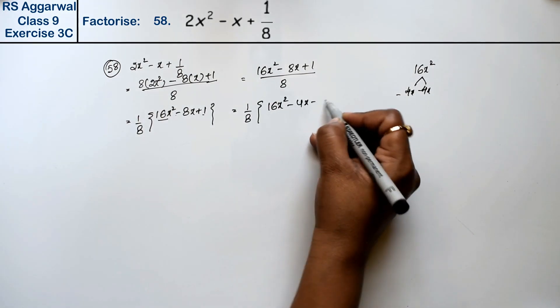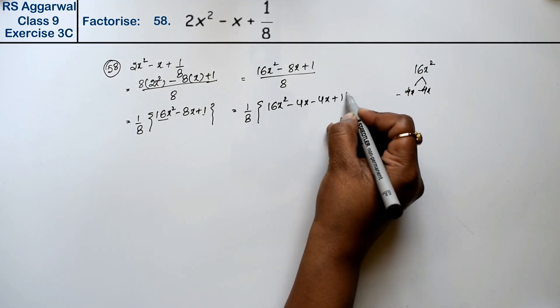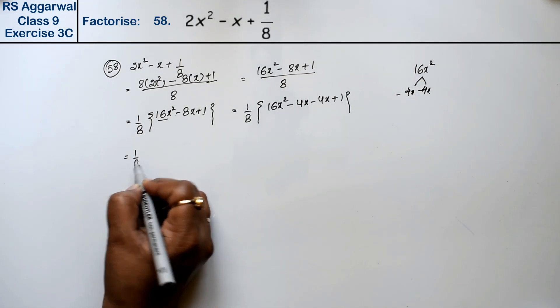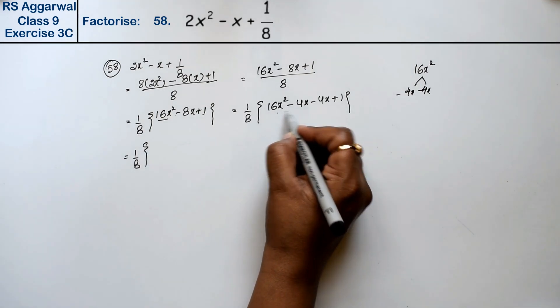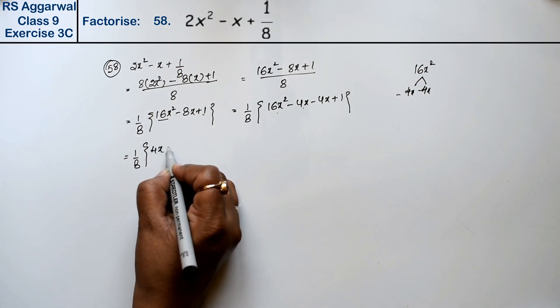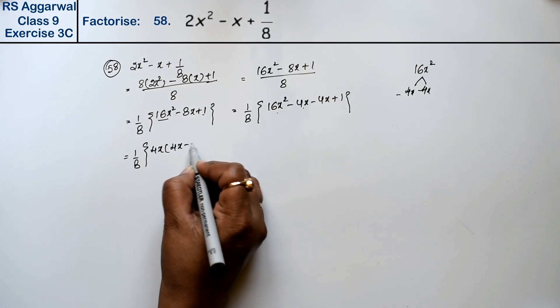1/8 is common. Now we group: 4x(4x - 1) - 1(4x - 1).